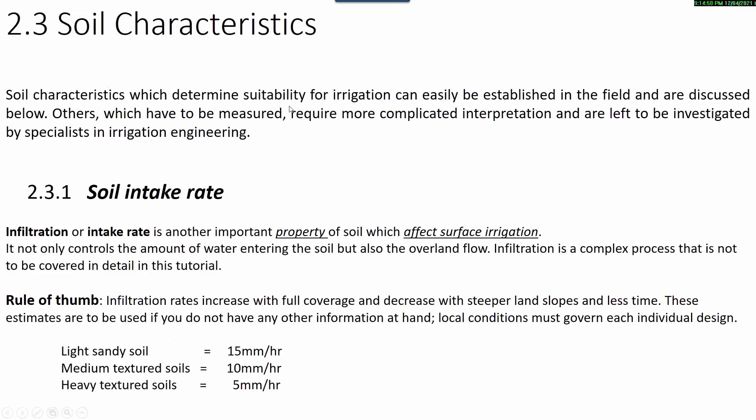Soil characteristics that determine suitability for irrigation can be established in the field. Infiltration or intake rate is another important property of soil which affects surface irrigation. It not only controls the amount of water entering the soil, but also the overland flow. As a rule of thumb, infiltration rates increase with full ground coverage and decrease with steeper land slopes. Infiltration rate for light sandy soil is 15 mm per hour. For medium texture it is 10 mm per hour, and for heavy texture it is 5 mm per hour.